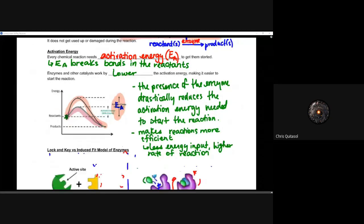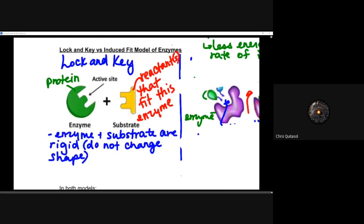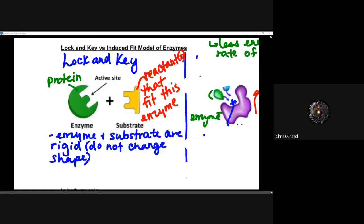There are two models we'll look at to describe how enzymes function. In the lock and key model, the enzyme and substrate are rigid — they do not change shape. The substrate fits perfectly into the enzyme's active site, like a key fitting only one specific lock. It is a one-to-one ratio: only one substrate fits that one enzyme.